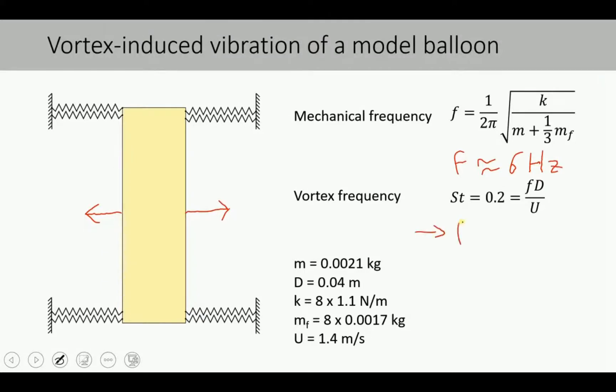The frequency of the vortex shedding is approximately 7 Hz. Note that these frequencies should be the same but can be slightly different. The system will then adjust itself to some extent.